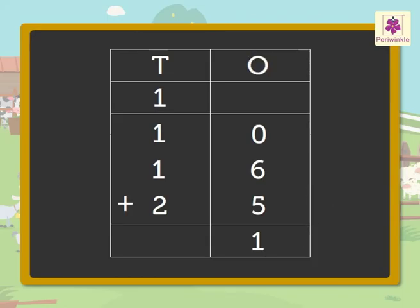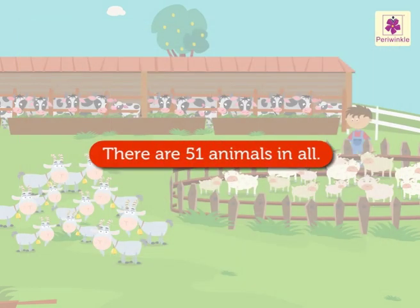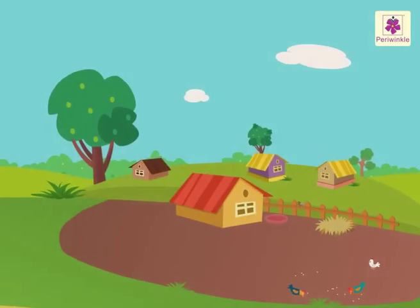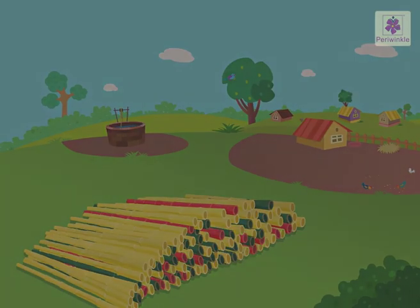Now add the tens: 1 plus 1 plus 1 plus 2, which is equal to 5. Thus 10 plus 16 plus 25 is equal to fifty-one. There are fifty-one animals in all. Hope you enjoyed the visit to the village!